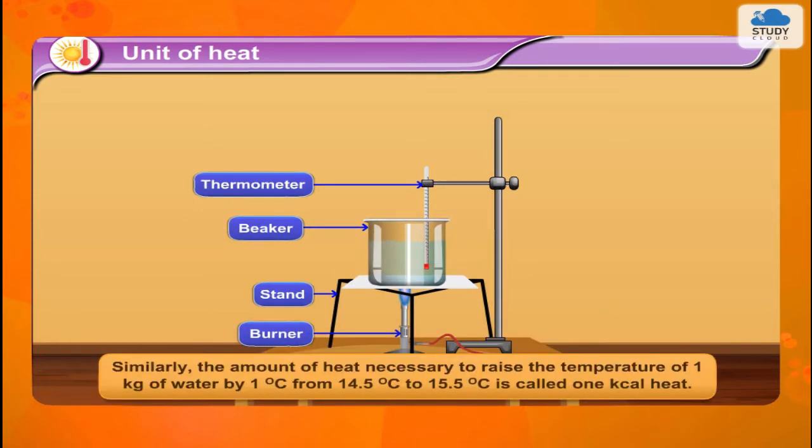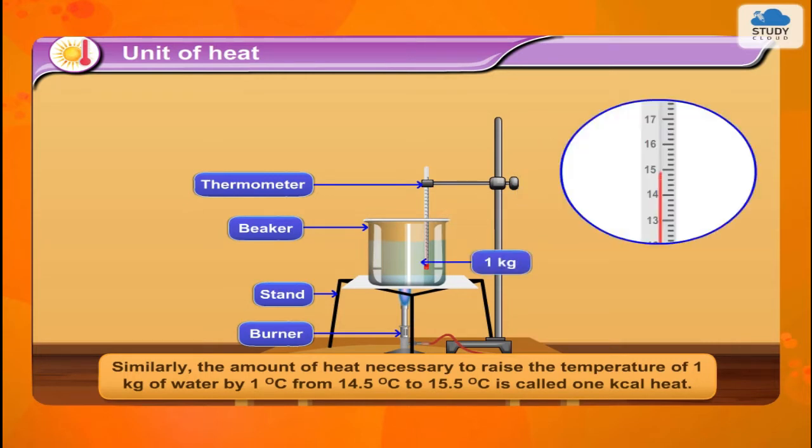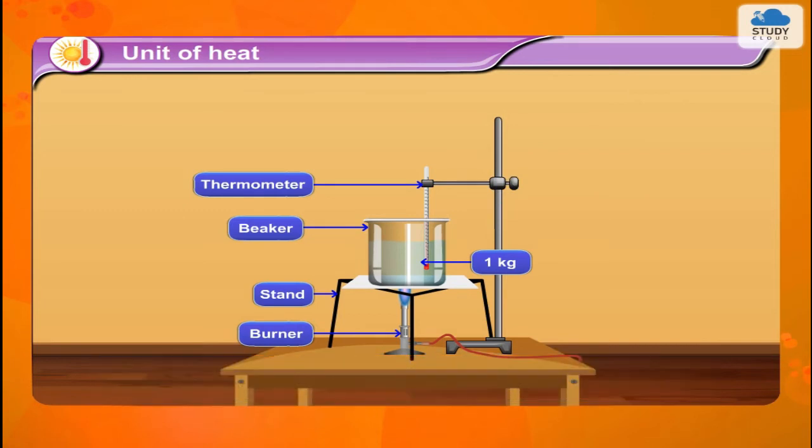Similarly, the amount of heat necessary to raise the temperature of 1 kilogram of water by 1 degree Celsius from 14.5 degrees Celsius to 15.5 degrees Celsius is called one kilocalorie of heat. It is clear that 1 kilocalorie equals 1000 calories.